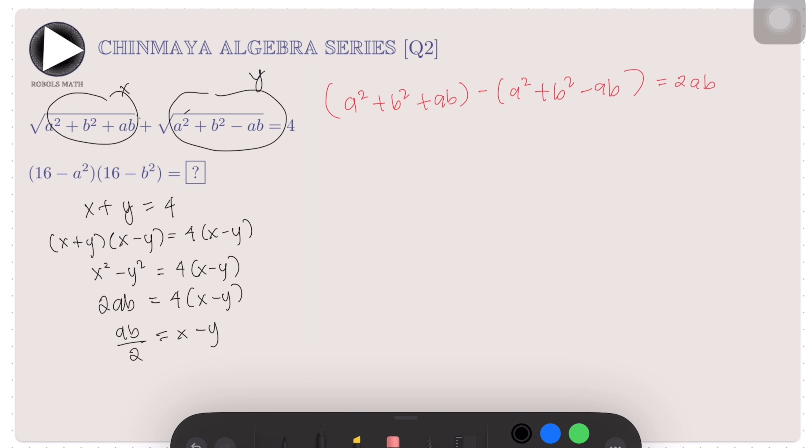Hence, we have here a system of two equations: x + y = 4 and x - y = ab/2. We can solve this equation for x by adding the two equations. We get 2x, to cancel the y, is equal to 4 + ab/2. And if we divide both sides by 2, we can get explicitly the value of x.